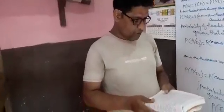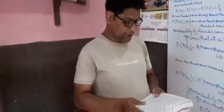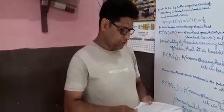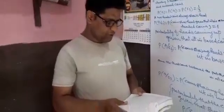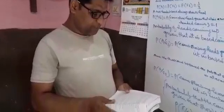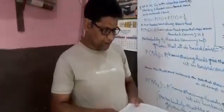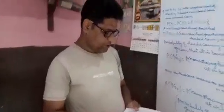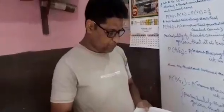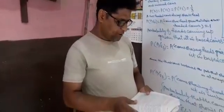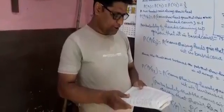There are 3 coins. One is a two-headed coin having heads on both faces. Another is a biased coin that comes up heads 75% of the time, and the third is an unbiased coin. One of the three coins is chosen at random and tossed. It shows heads. What is the probability that it was the two-headed coin?